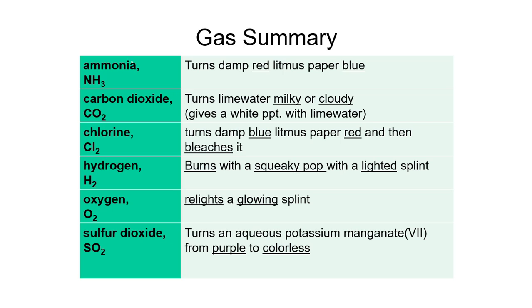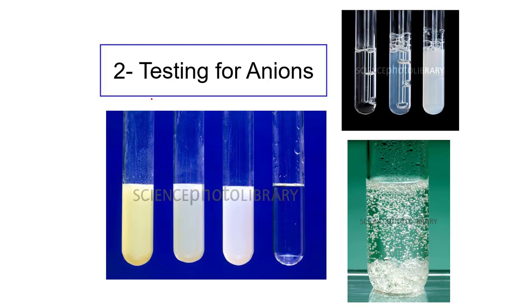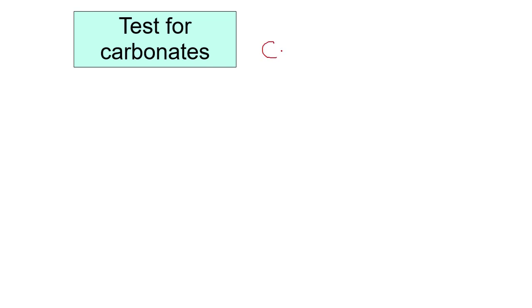Here is a summary for all the gases we studied: ammonia, carbon dioxide, chlorine, hydrogen, oxygen, and sulfur dioxide. Now the second test is testing for anions. Anions are the negative halves of compounds. The first anion is carbonate, CO3 2−.